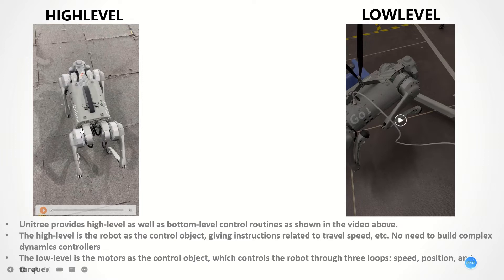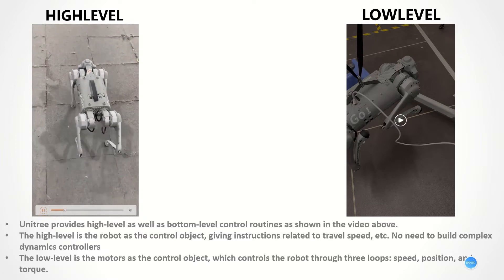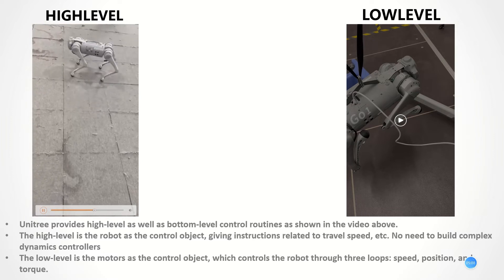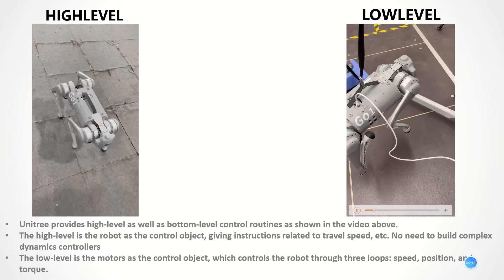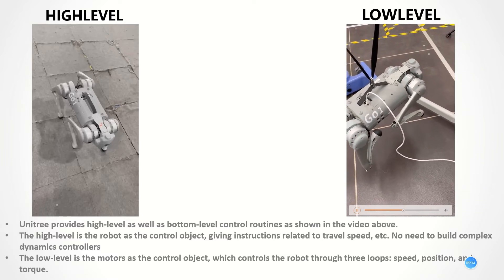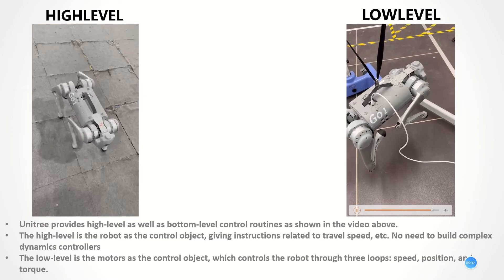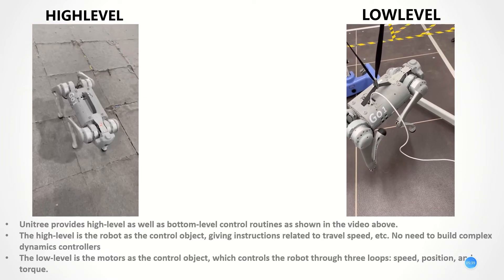In this video, the robot dog is controlled by high level. The high level of the robot dog can be viewed as an object — you can give instructions such as speed directly to it, and you have no need to build complex dynamics controllers. And this video shows low level. The low level means the motors can be viewed as objects which control the robot dog through three loops: speed, position, and torque.